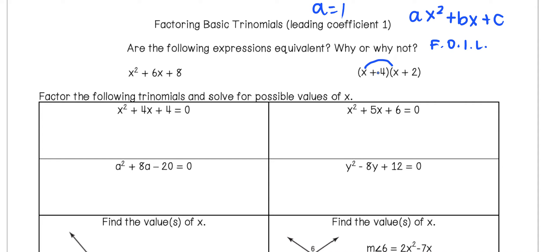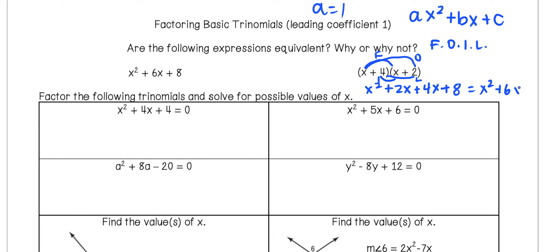So we take x times x — that's our first term, x squared. Then x times 2, our outer terms, gives us 2x. Our inner terms: 4 times x is positive 4x. And our last terms: 4 times 2 is positive 8. If we simplify and combine like terms, we end up getting x squared plus 6x plus 8.